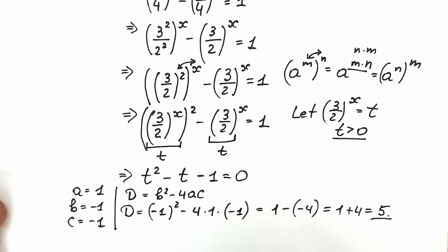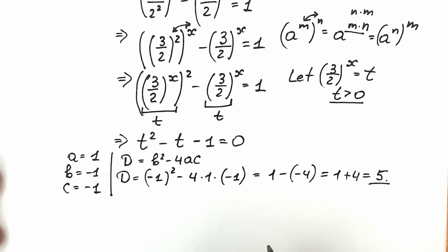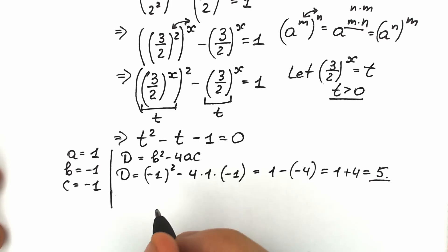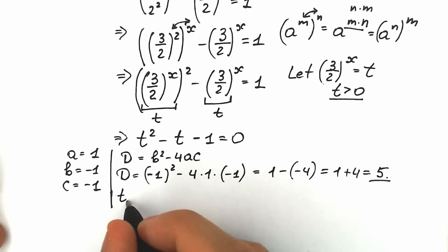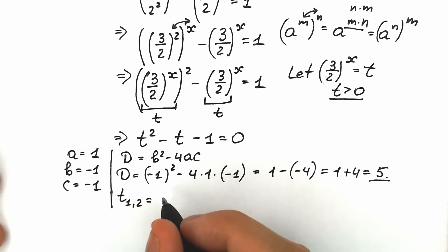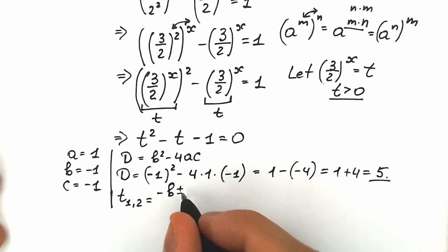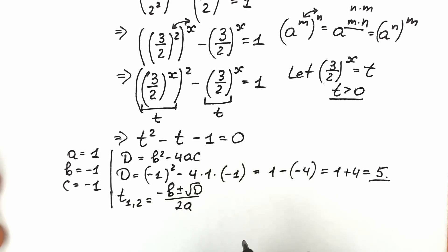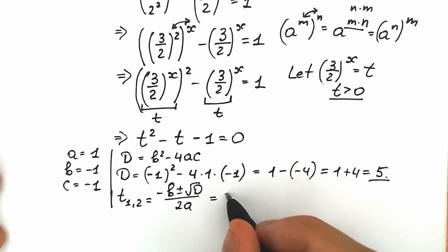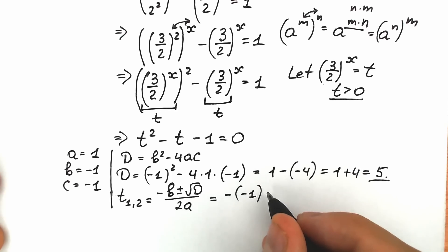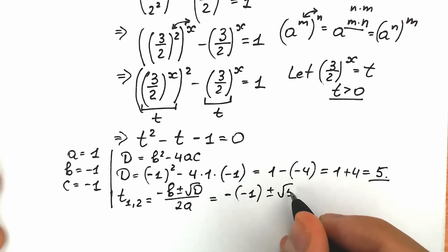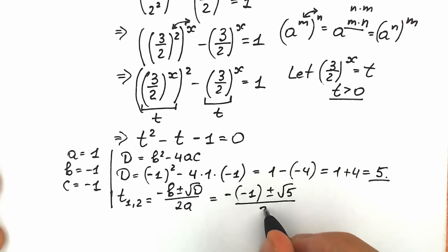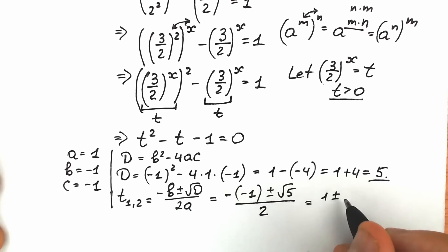Our discriminant is positive, so we have two real number roots. Using the quadratic formula, t equals (minus b ± square root of the discriminant) over 2a. Plugging in: minus b is minus (minus 1) which is 1, plus or minus square root of 5, all over 2. So our two roots are t equals (1 ± √5) / 2.